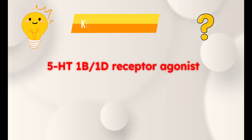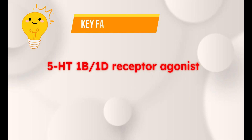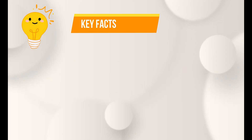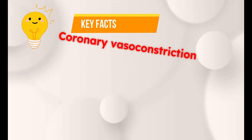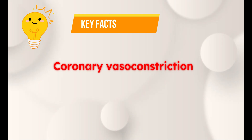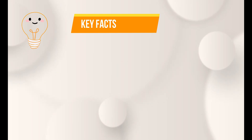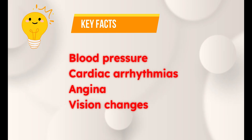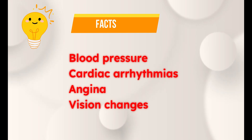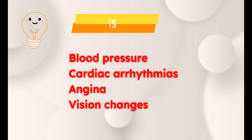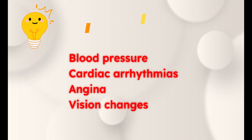Now let's see the key facts about sumatriptone. Sumatriptone is a 5D1B or 1D receptor agonist. It produces direct vasoconstriction of cranial blood vessels and also reduces the release of inflammatory mediators in the brain. The main side effect of sumatriptone is coronary vasoconstriction — it can produce chest pain, tightness, pressure, and even jaw and neck pain. Precautions include: sumatriptone can increase blood pressure, produce coronary vasoconstriction leading to cardiac arrhythmias and angina, and even though rare, it can also affect vision — so any change in vision should be immediately monitored.